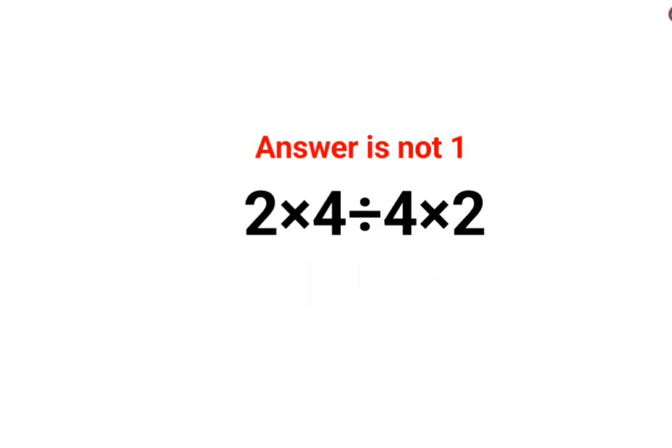The very reason for that is that division and multiplication hold equal precedence. So in sums like these, you will go from left to right. Whatever operation comes first from your left hand side has to be done first.